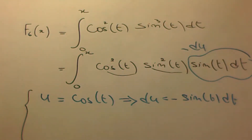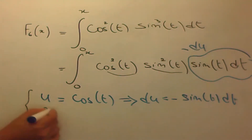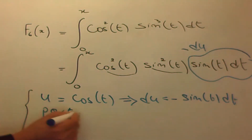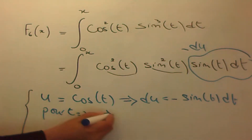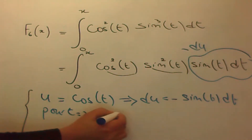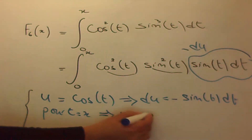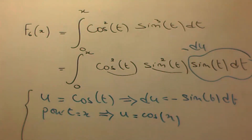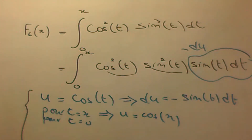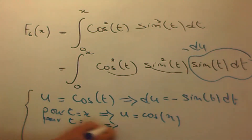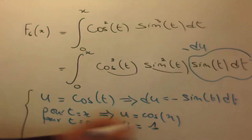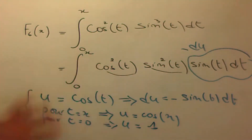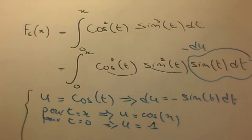Reste maintenant à modifier les bornes selon ce changement de variable. Pour t égal x, on a u égal à cosinus de x. Et pour t égal à 0, on a u égal à cosinus de 0, c'est 1. Donc on va appliquer ce changement de variable sur notre intégrale.